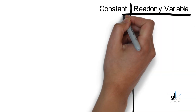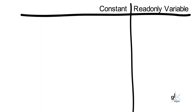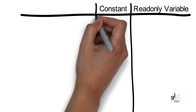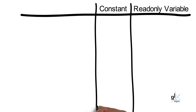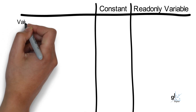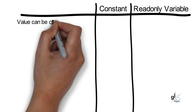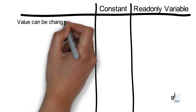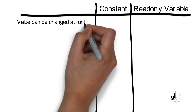This means that the value for a constant is established before the code is compiled, and this value cannot be changed at runtime. The value for a read-only variable can be initialized at compile time, but the key difference when compared to a constant is that the read-only variable can be changed at runtime.